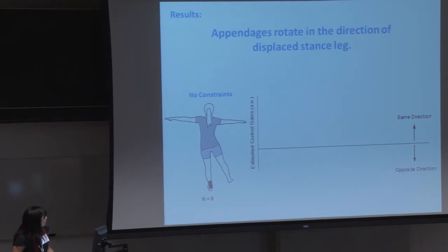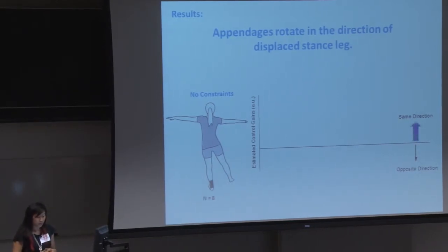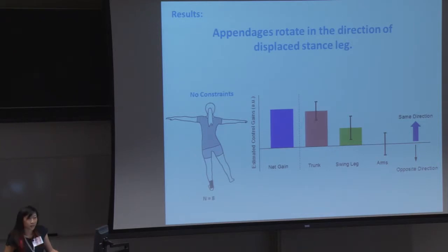So with our results, so from our expectation, we think it's going to be in the same direction. And from our data, it seems that people do have a positive gain, which means they are rotating their appendages in the direction that their stance leg is displaced. So how does this translate through the different appendages? So we have the trunk, the swing leg, and the arms. And the trunk and the swing leg act in the same direction, but the arms are actually in the opposite direction.